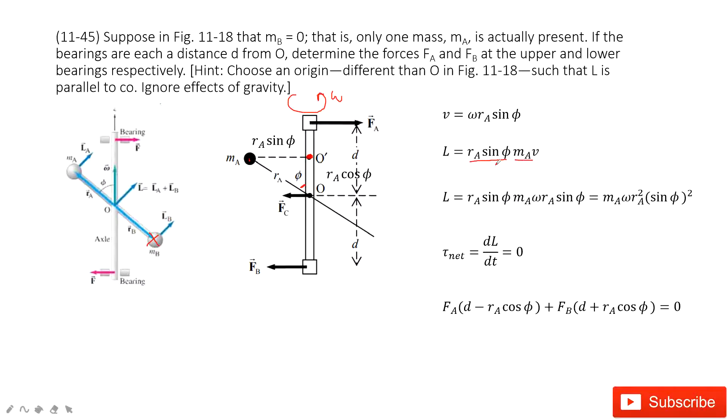So R is rA sin φ, P is mA times v. Now we input v inside. We get the equation becomes this part. Simplified, it looks like this one.